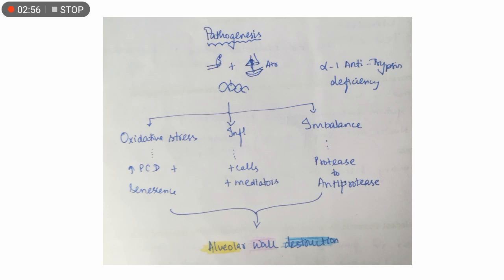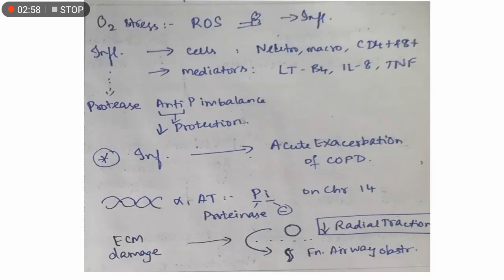Oxygen stress and free radicals or reactive oxygen species due to smoking stimulate inflammation. As a result of inflammation, inflammatory cells and mediators are released: cells such as neutrophils, macrophages, CD4 and CD8+ T cells; mediators such as leukotriene B4, interleukin-8, and TNF. Protease anti-protease imbalance follows inflammation because protease is released as a result of the inflammatory process.